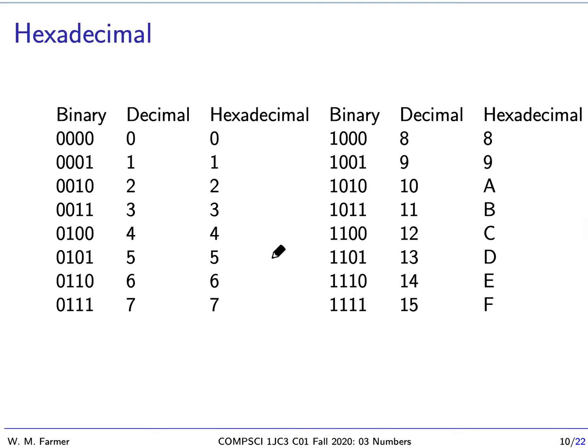This is a table that shows how we can represent the first sixteen numbers in binary, decimal, and hexadecimal. Notice that in decimal, we can represent most of them, the first ten, with one digit, with the next six, ten through fifteen, we need two digits. But, with hexadecimal, we can represent all of them with just one digit. We can represent any binary number using four digits with exactly one hexadecimal. That's the purpose of hexadecimal. It allows us to represent binary numbers in a compact form.